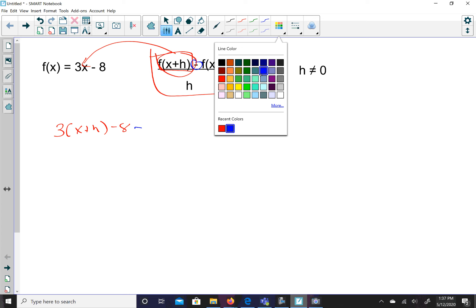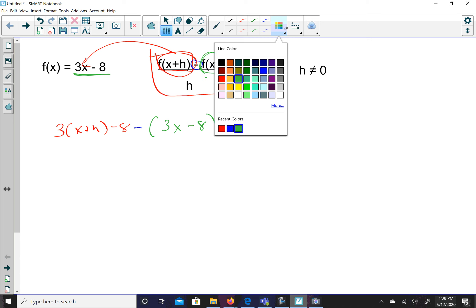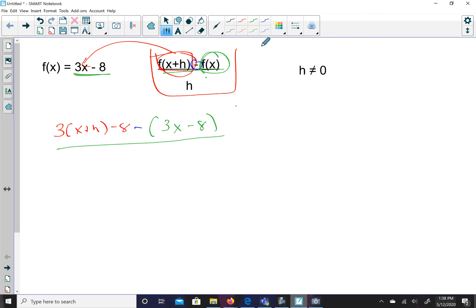And then now I'm going to do f of x, and let's make f of x green. So f of x will be here. And f of x is this. So since I have this negative sign here, I'm going to put this in parentheses to make sure that I distribute that negative sign correctly. And this whole thing is going to be over h. I'm going to make this whole thing over h. And I kind of want to make that blue, so I'm going to go back to blue.